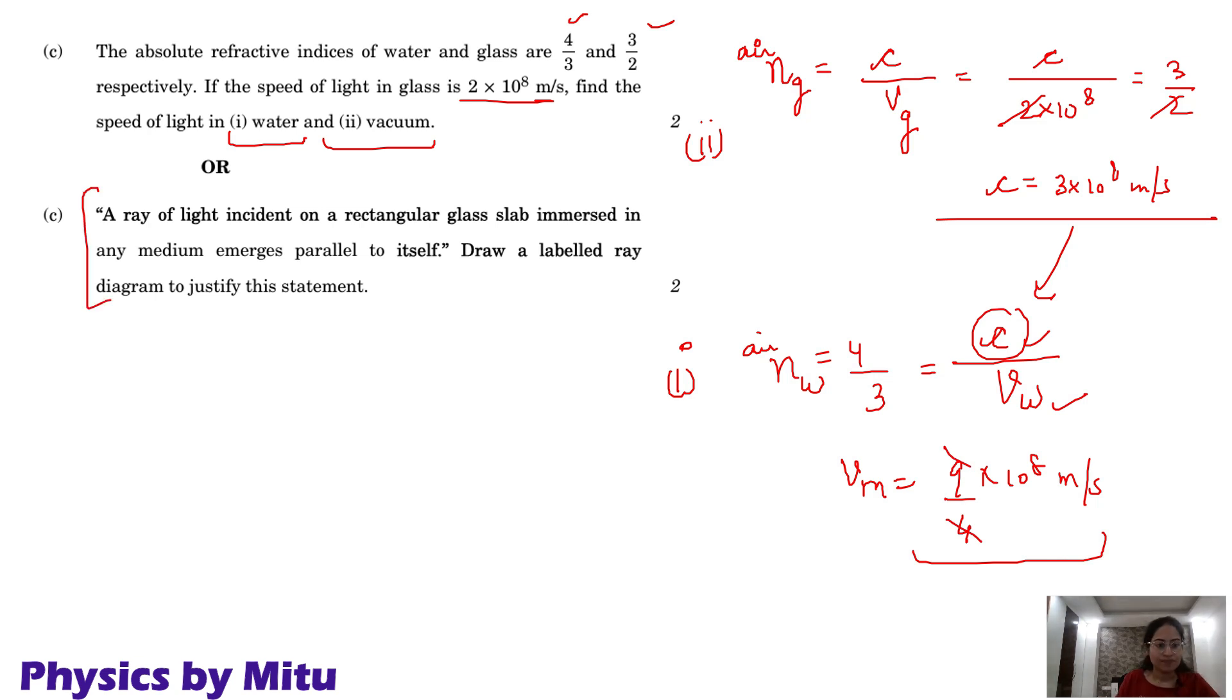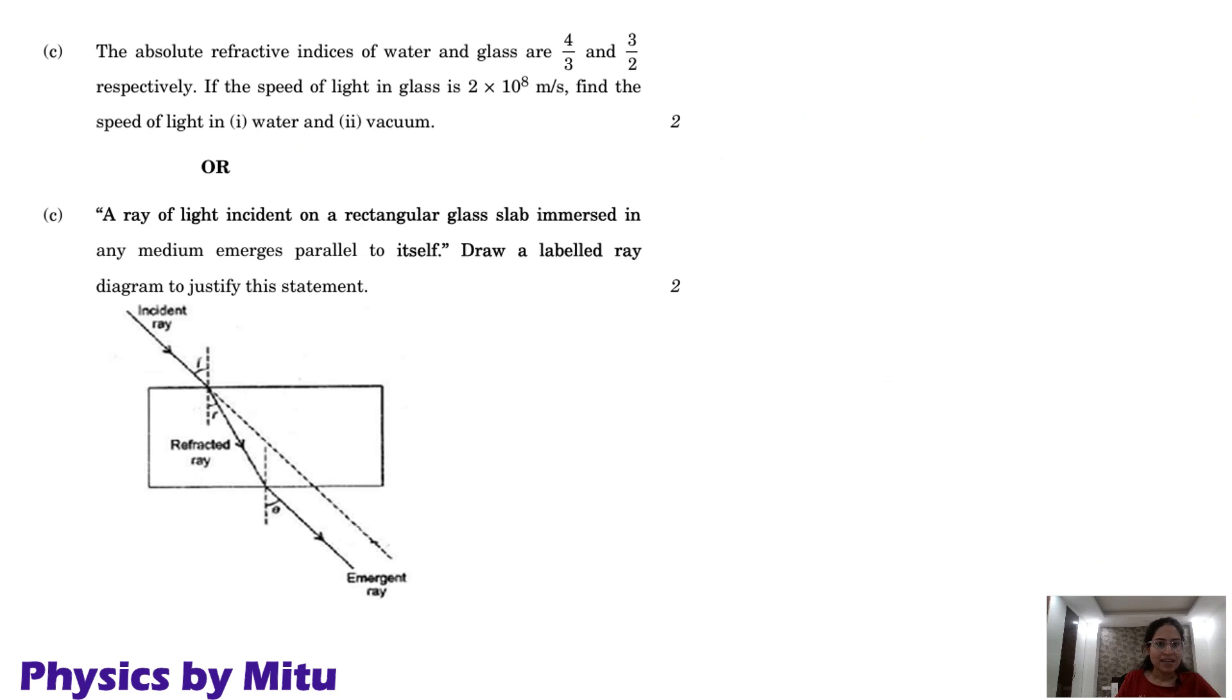Next part, ray of light incident on a rectangular glass slab emerged in any medium parallel to the diagram. It was glass slab. Incident ray, it bends towards the normal. And this is incident ray, original path. And you can see that they are parallel to each other. And what is this distance called? Perpendicular distance between emergent ray and incident ray, it is called lateral displacement.